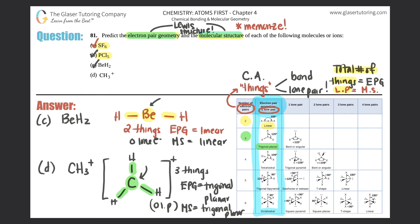That finishes part (d). This problem got your feet wet in understanding electron pair geometry versus molecular structure — but it all comes from Lewis structures. If you can't get those down, go back to starting at number 40 and you'll get them. If you want more practice, hang tight — there's more practice coming on the playlist. Click subscribe and see you in five seconds.